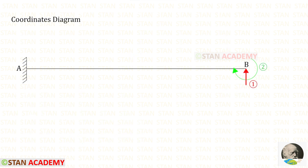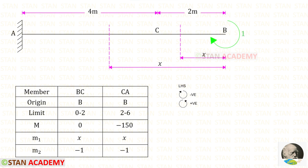Now we are going to find the moment M2. For that we have to apply a unit moment at the second coordinate, which is MB. We have kept MB in the clockwise direction, so we apply the unit moment in the clockwise direction. Up to both sections there is no load, only the unit moment acting clockwise, so M2 will be negative 1.